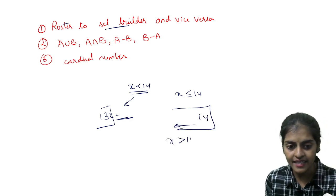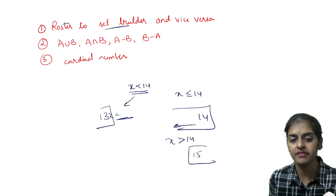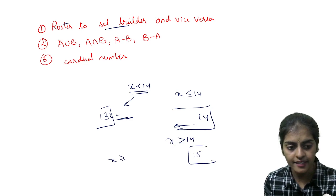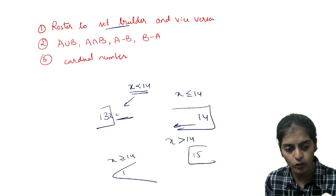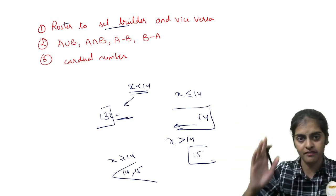If I write x greater than 14, which means I cannot take 14, I should start from 15. If I write x greater than or equal to 14, then I should include 14 also and then 15. So these values, greater values I have to take.